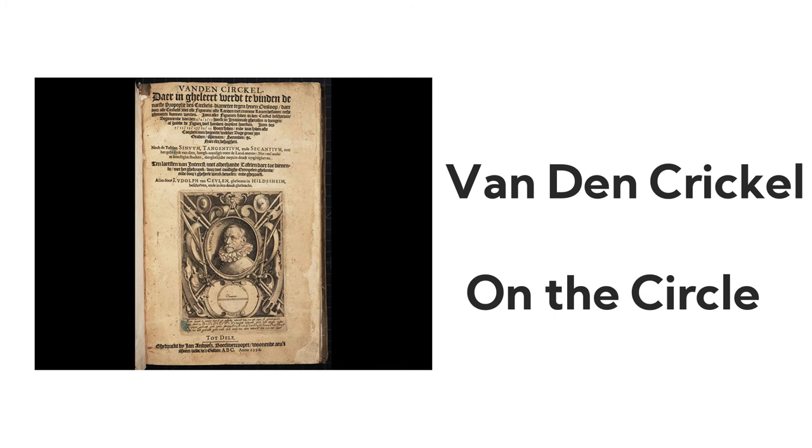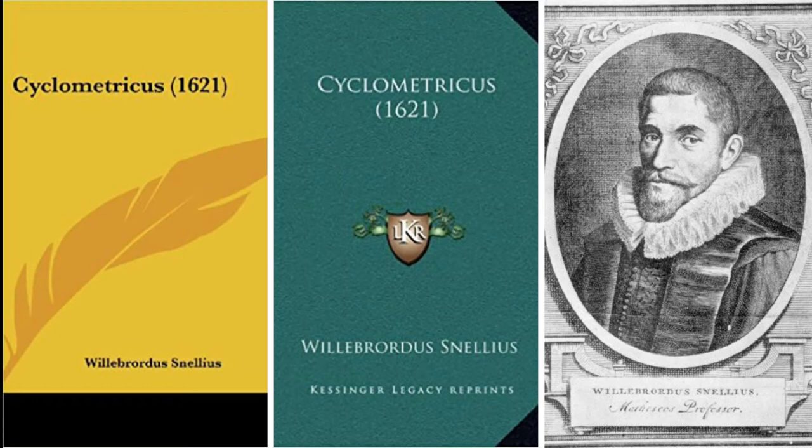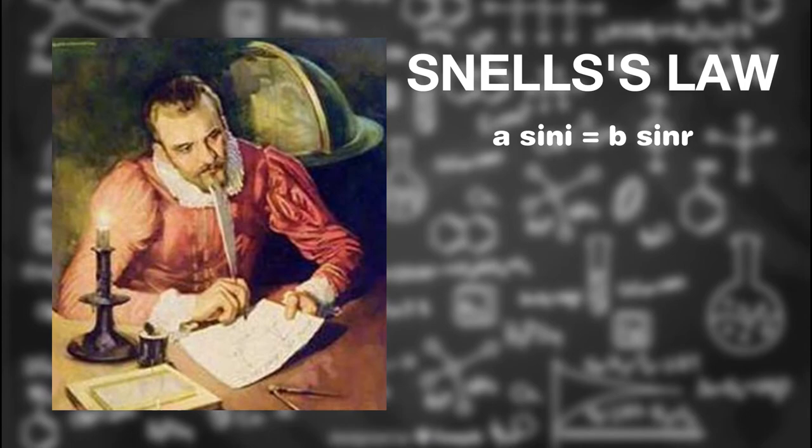Later, 35 decimal places of pi were published in a book, Cyclometricus, which was written by his student, Willebrord Snellius. Willebrord Snellius is one of the greatest men in the history of science. He proposed the famous Snell's law, which plays an important role in optics.